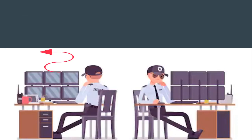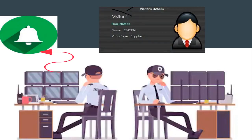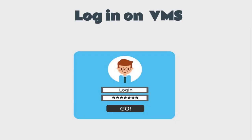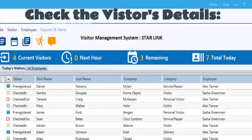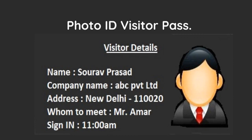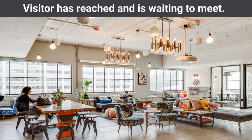The visitor's meeting gets scheduled and a notification is sent to the main entrance. When the visitor arrives, they show their ID proof at the main entrance lobby along with the name of the concerned person they want to meet. The entrance staff logs in with their user ID, checks the visitor's details, authorizes the gates for limited access, enters the sign-in time, clicks a photograph of the visitor, and issues a photo ID visitor pass.